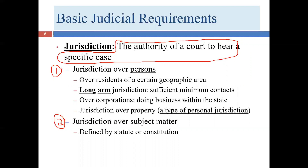That makes sense — if you live in Texas and have no connections to Alaska, you shouldn't have to go all the way to Alaska for a lawsuit. In the United States, each state has its own jurisdiction: Texas courts are different from Massachusetts courts, Hawaiian courts, Louisiana courts, or Oklahoma courts. From a legal perspective, crossing the Red River is as big a deal as crossing the Pacific Ocean to get to Hawaii.